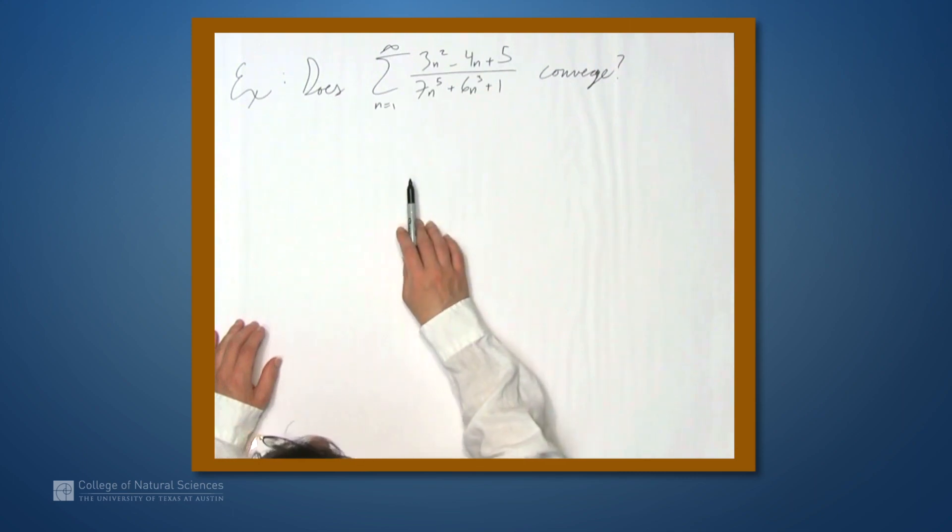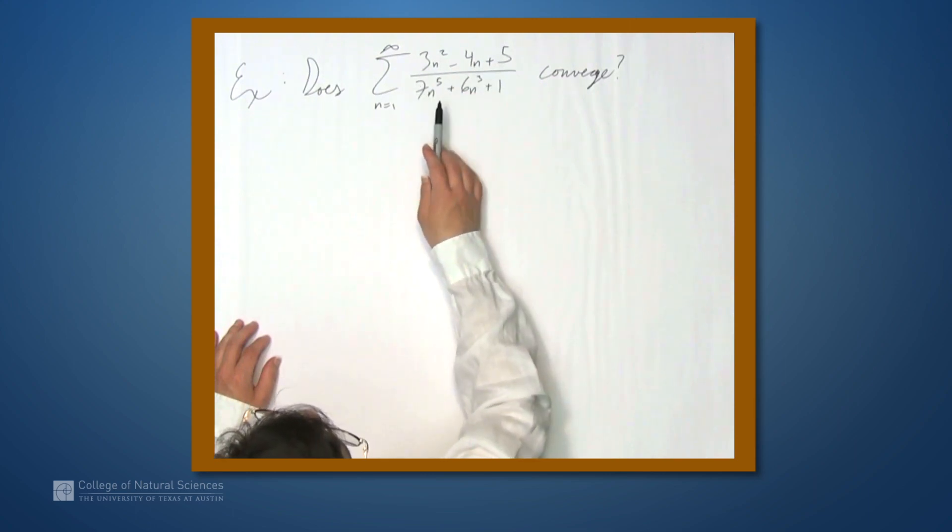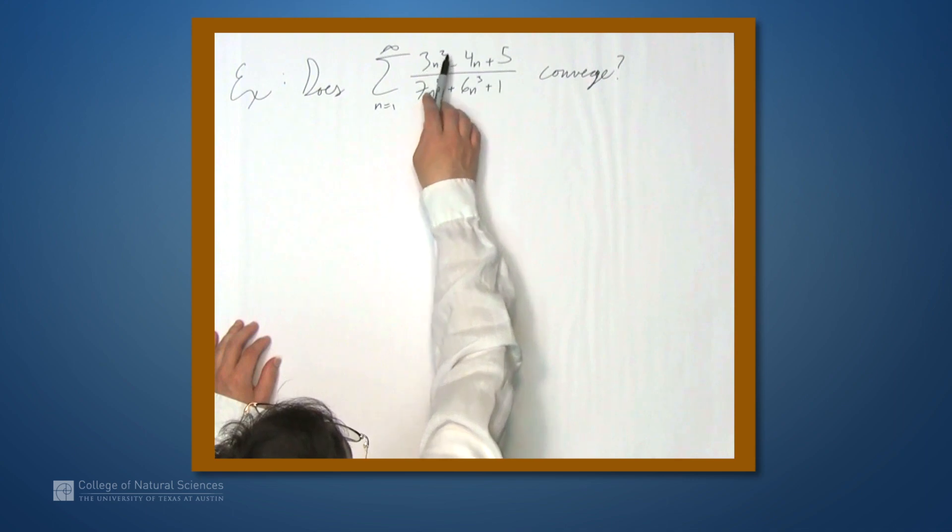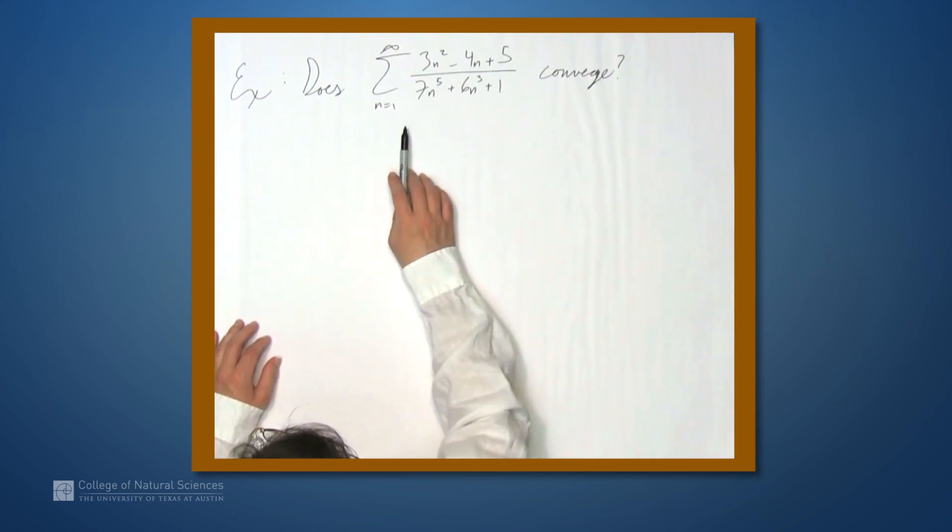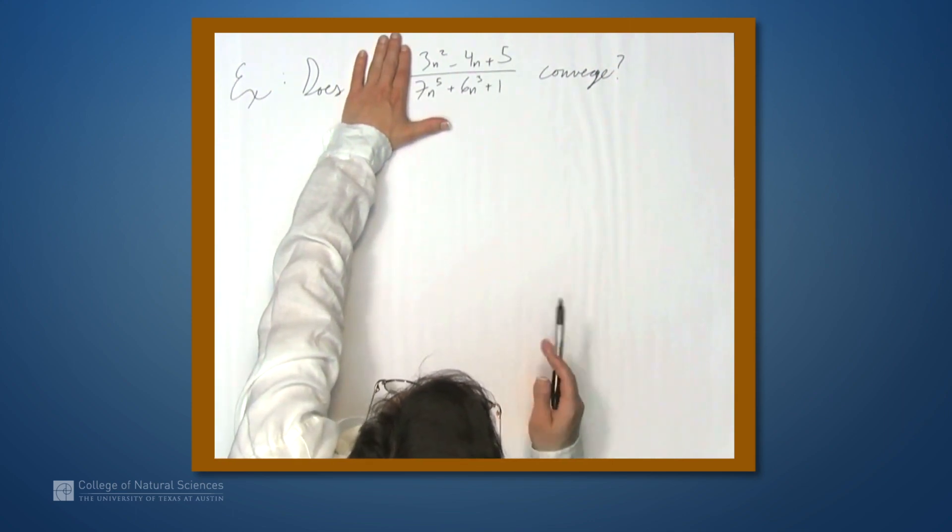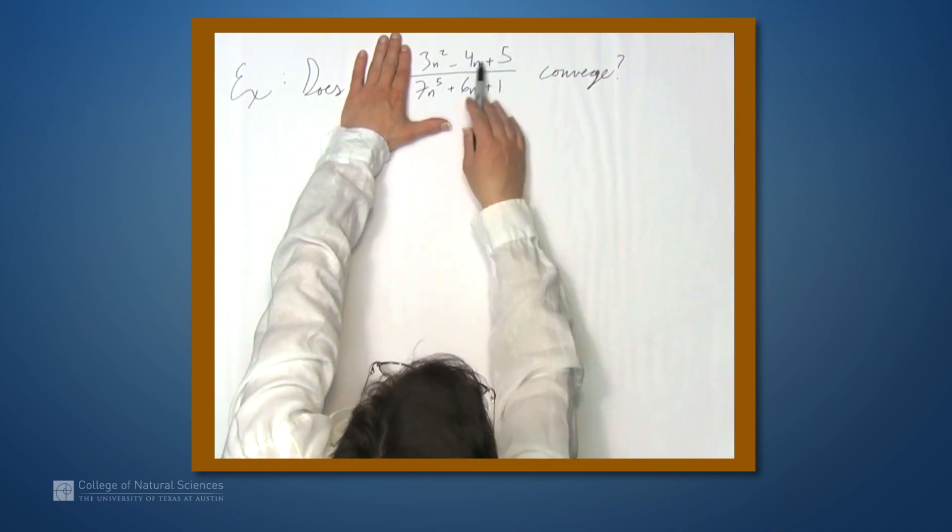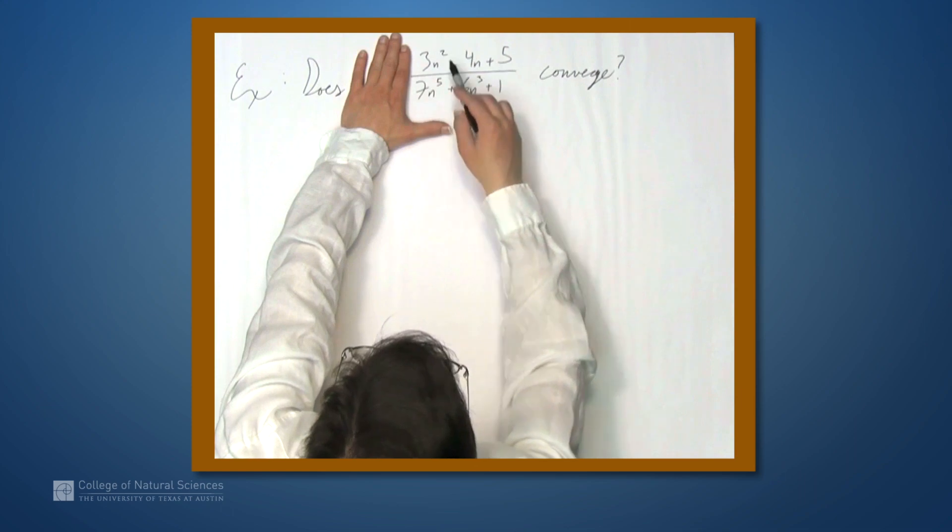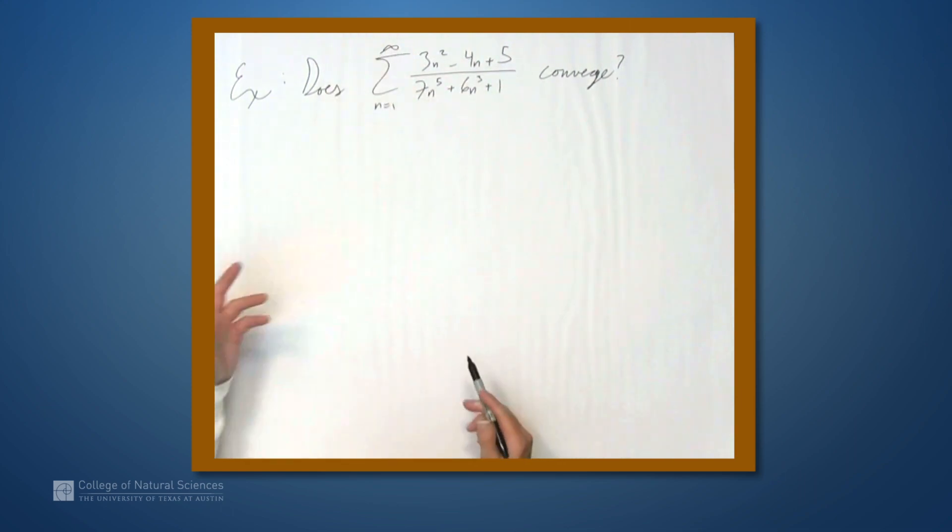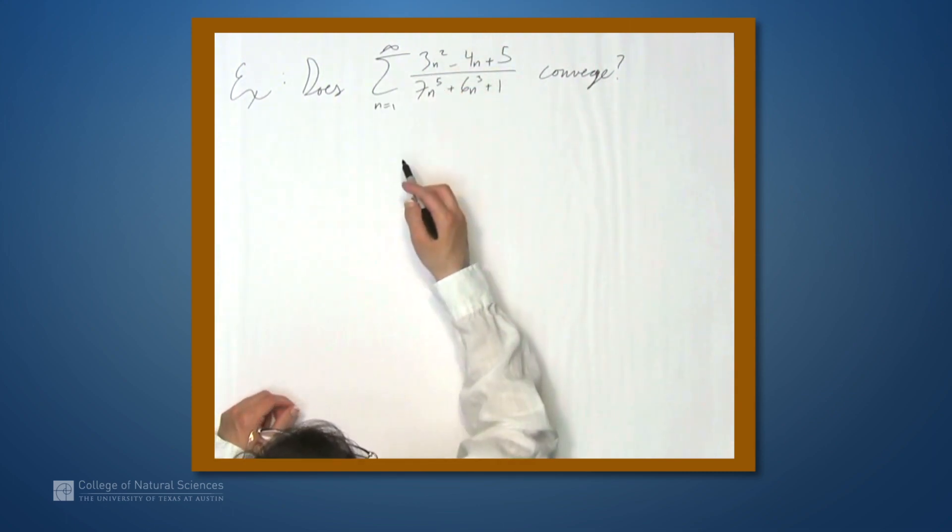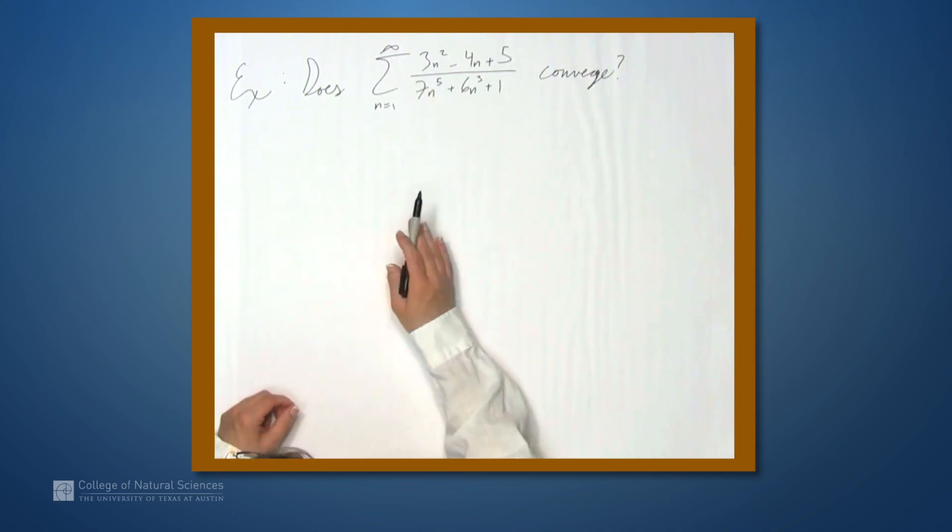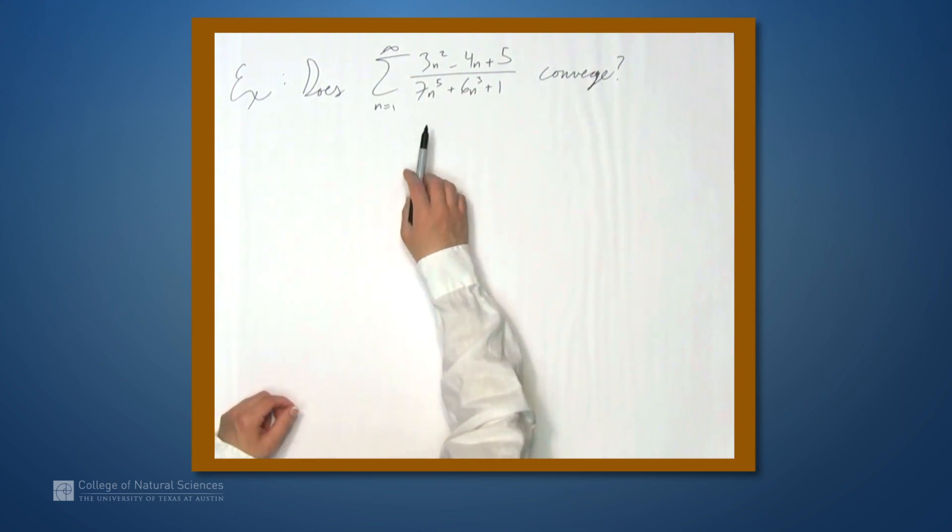All we have to be able to do is look at this expression and get some sense of how it should behave in the long run. If we look at the numerator, the thing that determines the size for large values of n is the 3n squared term. The thing that determines the size of the denominator is the 7n to the fifth term. These other terms end up being disregarded. So if we ignore these things, we get 3n squared over 7n to the fifth. Let's ignore the 3 and the 7. Essentially, we're dealing with n squared over n to the fifth, which should behave like 1 over n cubed.